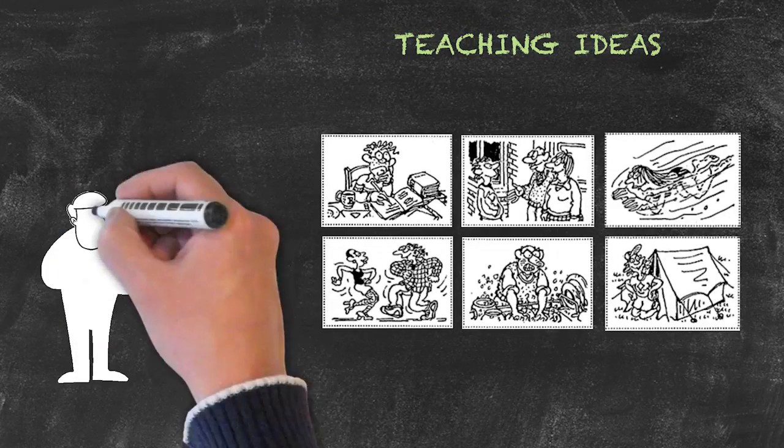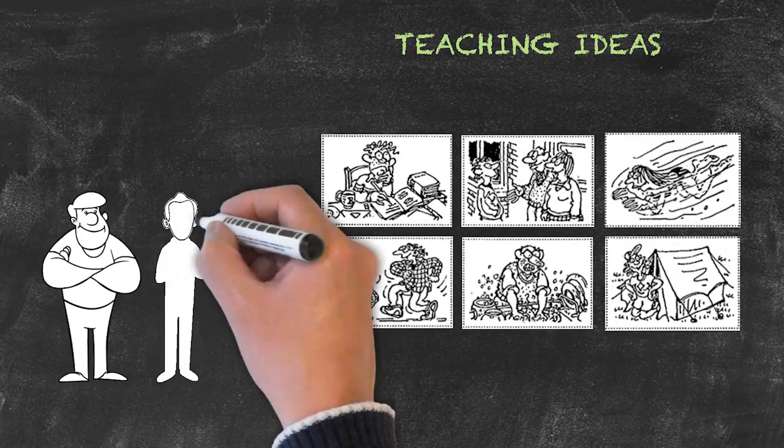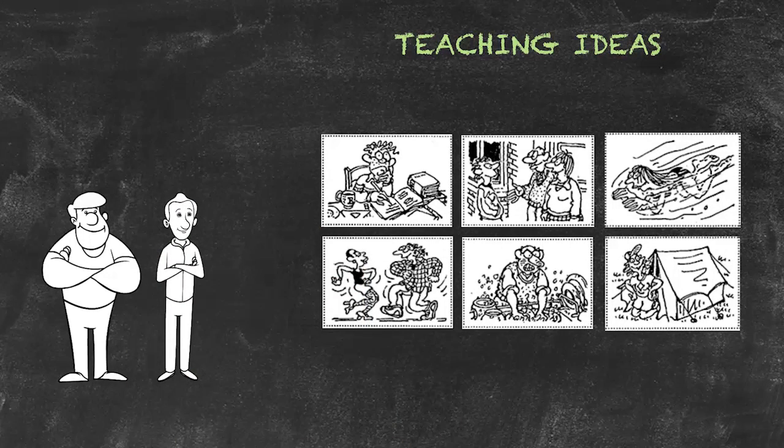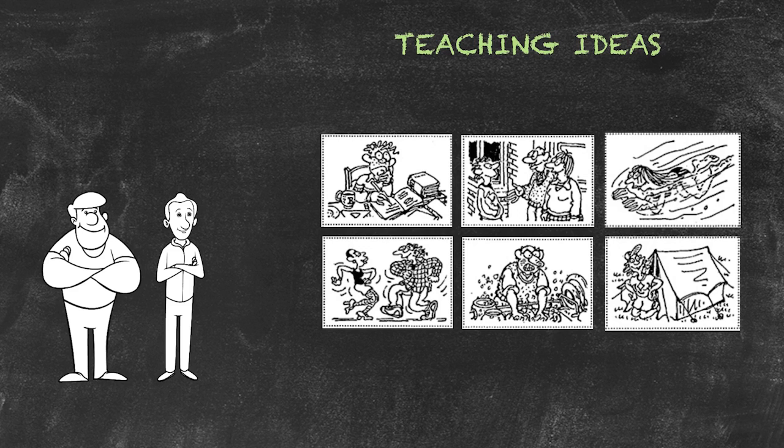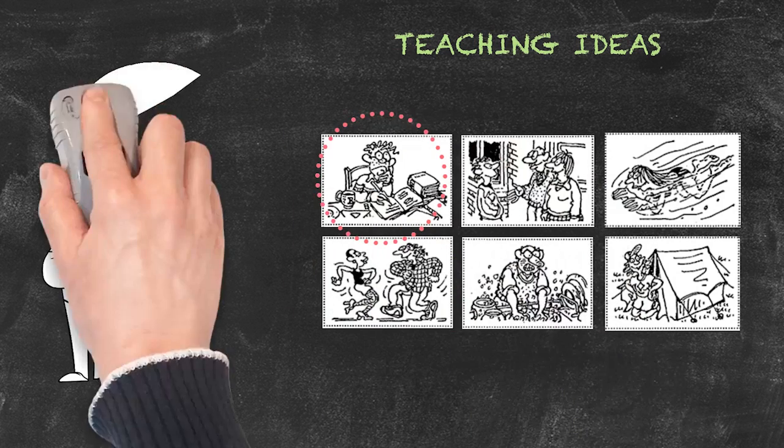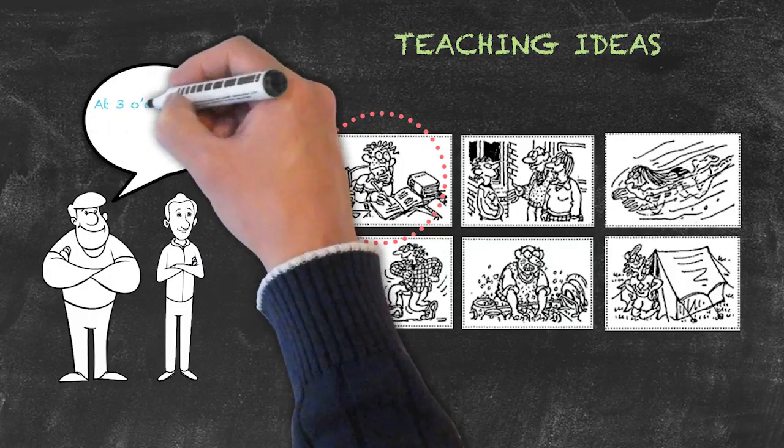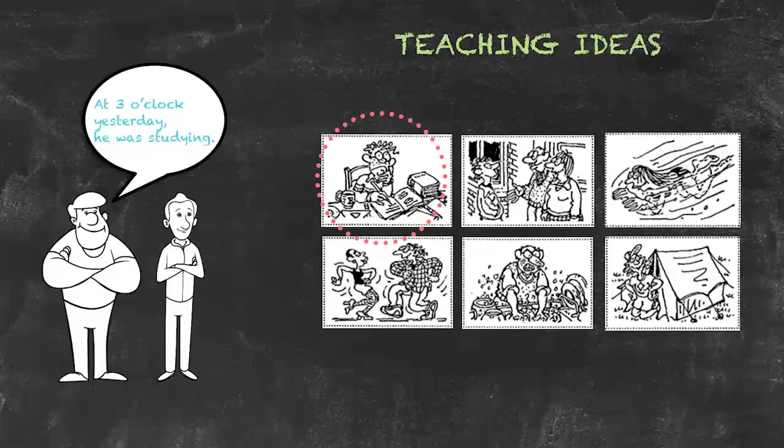In this activity we'll cut up our cards before class and give each pair of students a group of these cards. What they'll do is flip over a card at random. They'll need to choose a time and then create a sentence for what the people in the pictures were doing at that time. So if they pick up this card here, a possible sentence might read 'at three o'clock yesterday he was studying.'